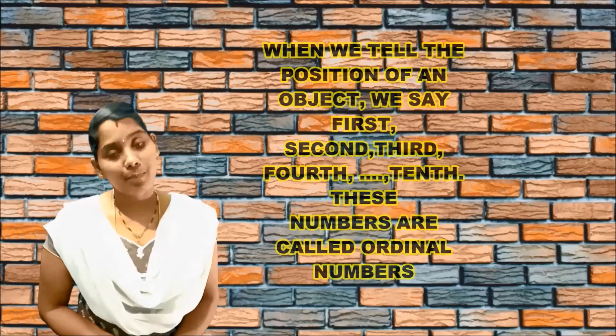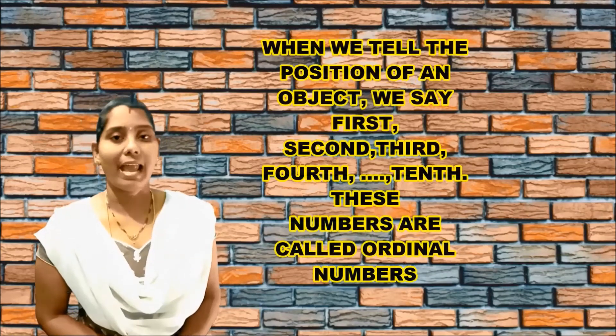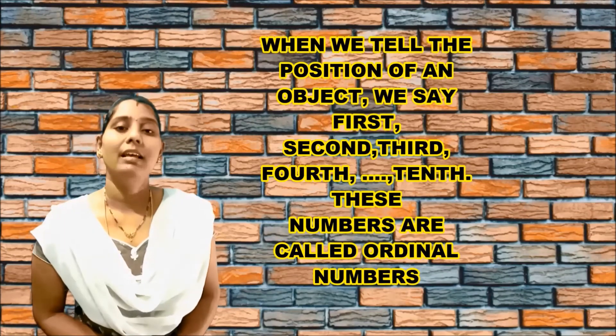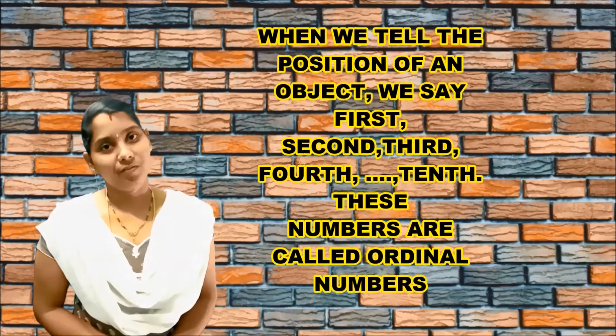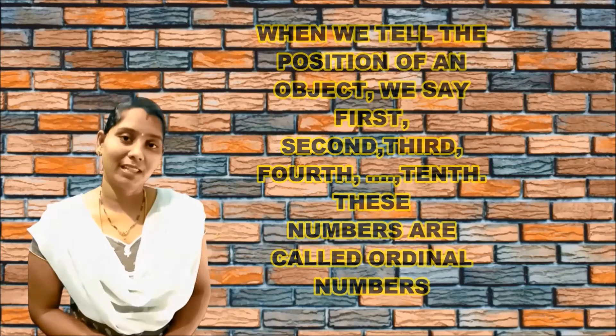What are cardinal numbers? When we tell the position of an object, like 1, 2, 3, 4, 5, 6, 7, 8, 9, 10 — like that, these numbers are called cardinal numbers. Cardinal numbers means when we tell the position of an object.